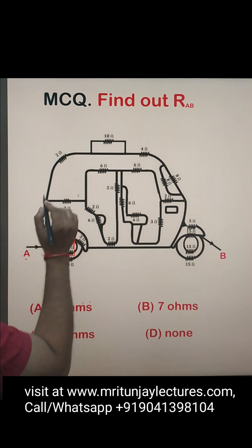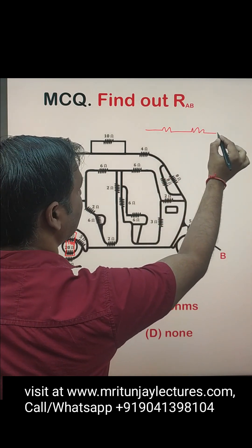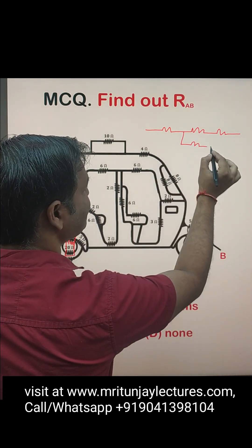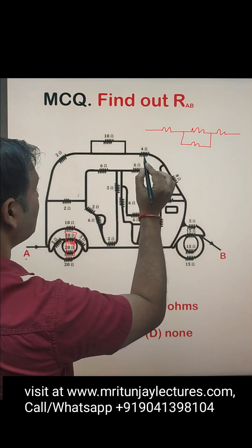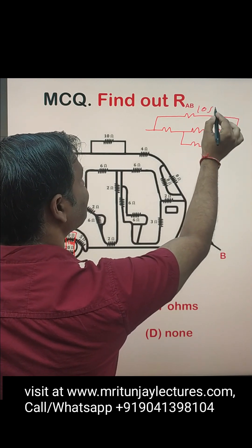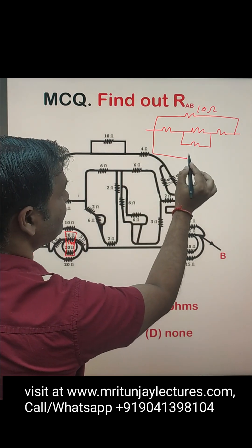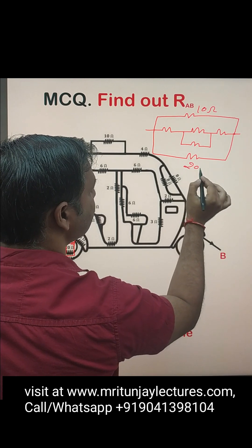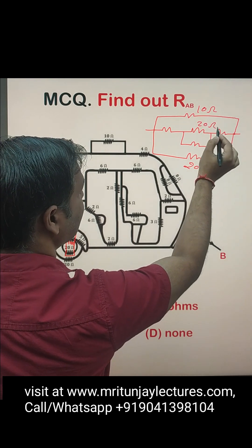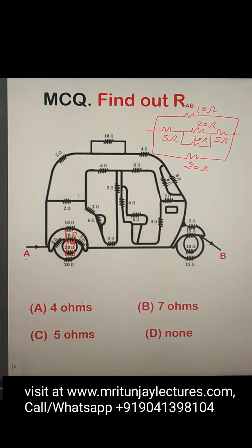For anyone facing doubt, let me redraw: here is 5Ω, here 20Ω, here 5Ω, and that is 20Ω, then 10Ω, 10Ω, 20Ω, and 20Ω. Also here 20Ω, 20Ω, 5Ω, and 5Ω.